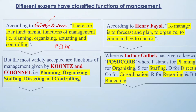We will discuss these in detail on the other slides. As per four different experts — George and Jerry, Henry Fayol, Koontz and O'Donnell, and Luther Gulick — we have to remember what they have classified the functions of management as. The first one says: planning, organizing, actuating, and controlling. Actuating means to operate — how you make any machine or device operate.